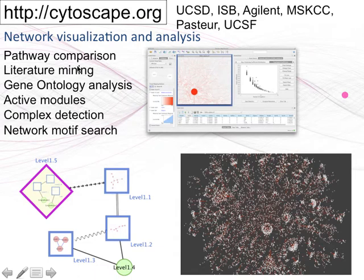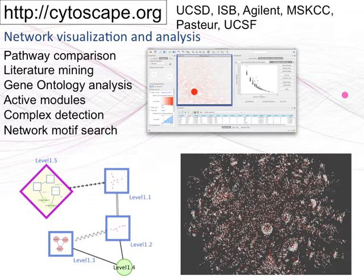Cytoscape is the most popular software available for network analysis. It's developed by a large consortium of individuals — my lab is one that contributes, along with people in San Diego, San Francisco, Seattle, Paris, Amsterdam, and other places. It's open source software, meaning all the source code is freely available and people contribute to it as a team effort. We do this because we need this type of software in our own research and don't want to build it alone.